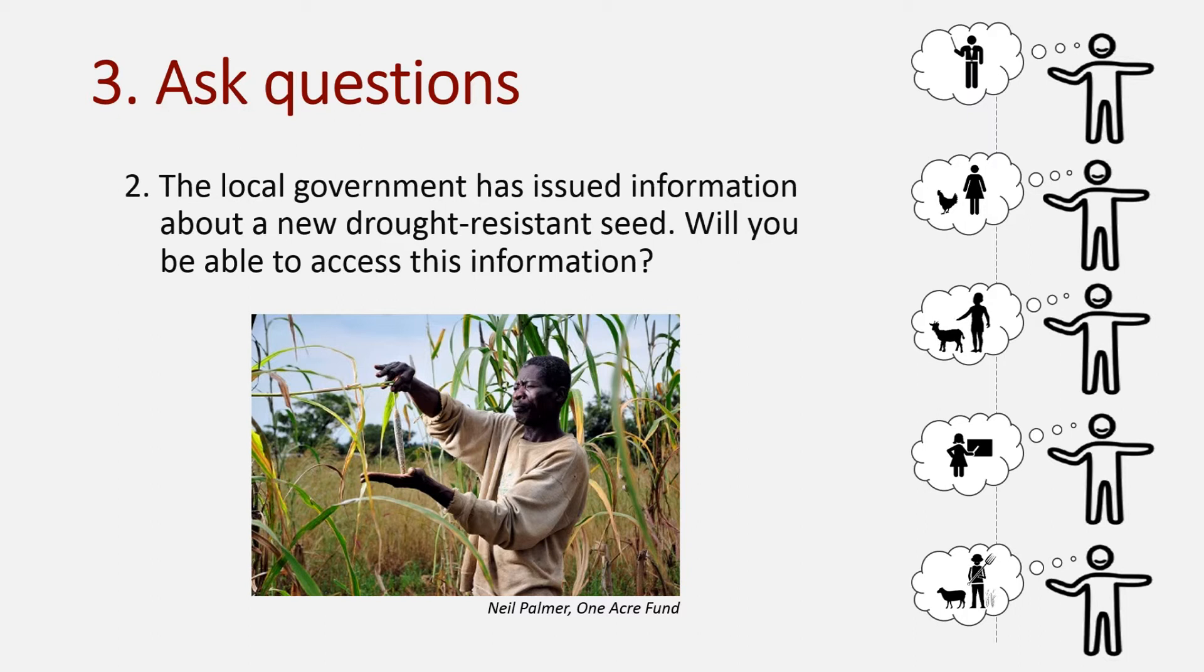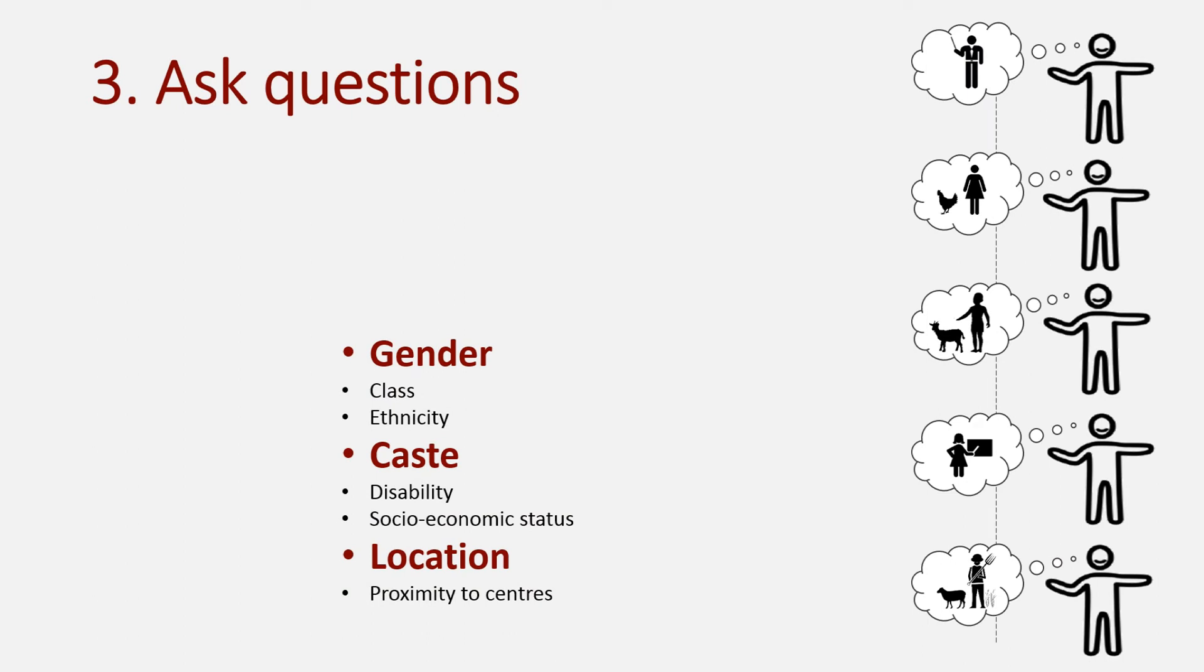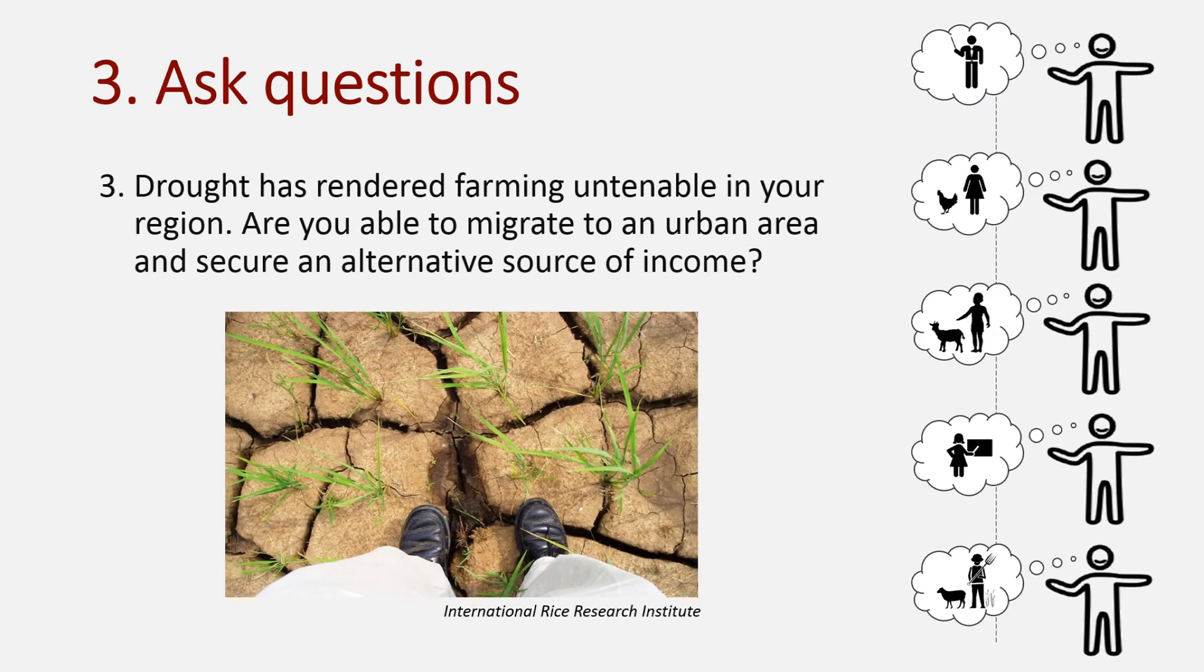Or you might want to draw out differences in livelihood options that might be location, caste and gender-related. To do this, you could ask a question like this one. Drought has rendered farming untenable in your region. Are you able to migrate to an urban area and secure an alternative source of income?